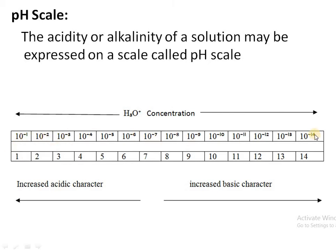The hydronium ion concentration is directly proportional to its pH range. When the concentration is 10 raised to power minus 14, the pH is 14. When concentration is 10 raised to power minus 7, the pH is 7. When concentration is 10 raised to power minus 1, the pH is 1. The pH below 7 represents increasing acidic character.